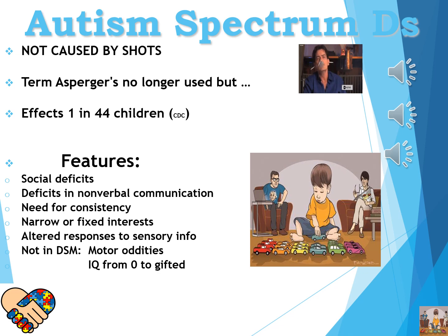Altered responses to sensory information are also characteristic — being overly drawn to sensory cues like smelling everything, or conversely being overly sensitive so that normal sounds or voices are painful. Not in the DSM but worth mentioning are motor oddities such as pill rolling with the fingers, incessant rocking, and stimming behaviors. IQ can range from zero to outright gifted; there is no particular IQ associated with being on the spectrum.